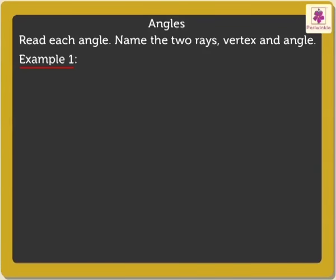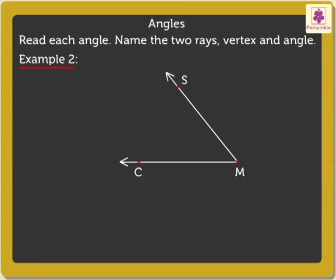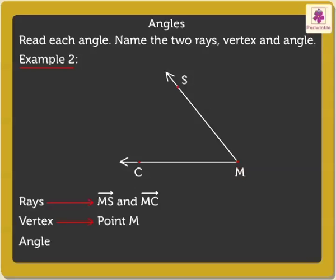Now, let's look at another example. The two rays are ray MS and ray MC. Here, point M is the vertex of the angle. Here, the angle is angle SMC or angle CMS.